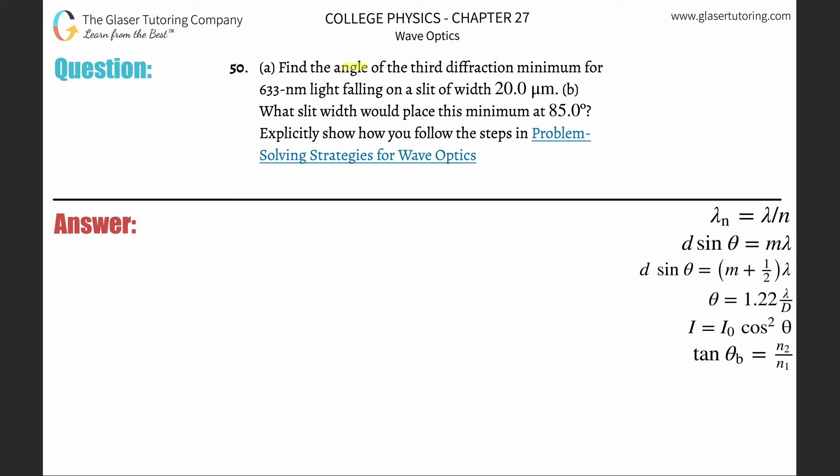Number 50, letter A. Find the angle of the third diffraction minimum for 633 nanometer light falling on a slit of width 20 micrometers.